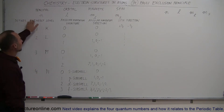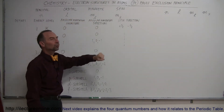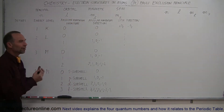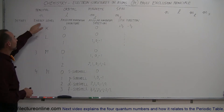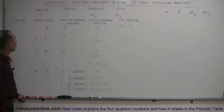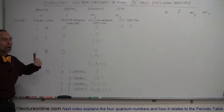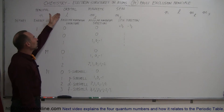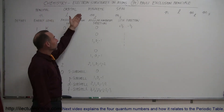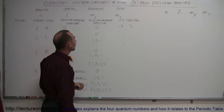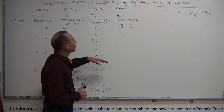Remember that we had four quantum numbers: the principal quantum number, the orbital quantum number, the magnetic quantum number, and the spin quantum number, each defining a certain aspect of the electron. The principal quantum number defines the energy level where the electron resides. The orbital quantum number defines the angular momentum of the electron. The magnetic orbital quantum number defines the direction of the angular momentum of the electron. And finally, the spin quantum number defines the spin direction of the electron.